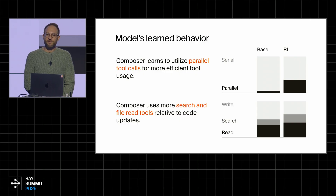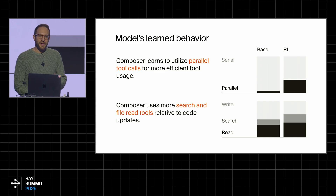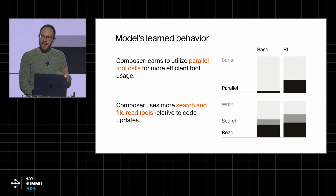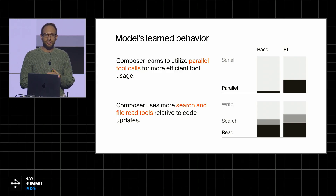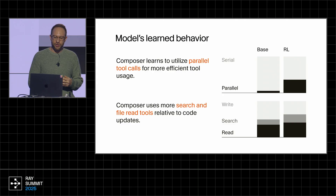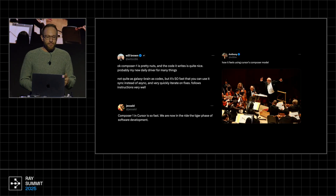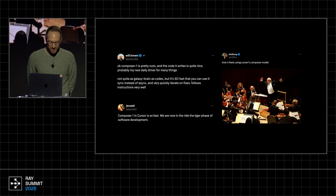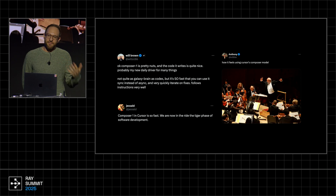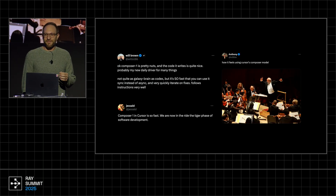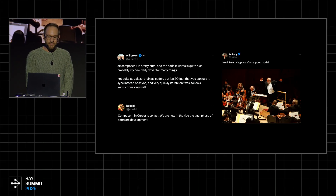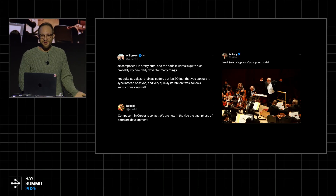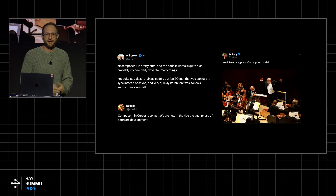We think we can push parallel tool calling even further in future training. We also found that the model learned to behave better as an agent. At the beginning, it was making too many edits without sufficient evidence. As we trained, the model read more files and did more search to find the right thing to edit and make the correct change. Most importantly, users seem to like it. The main feedback we heard is that the Pareto combination of speed and intelligence unlocks a different sort of coding — people are getting quick results and moving on to their next problem rather than starting an agent and checking Twitter while they wait. Internally, many of our developers now use it in their day-to-day work.